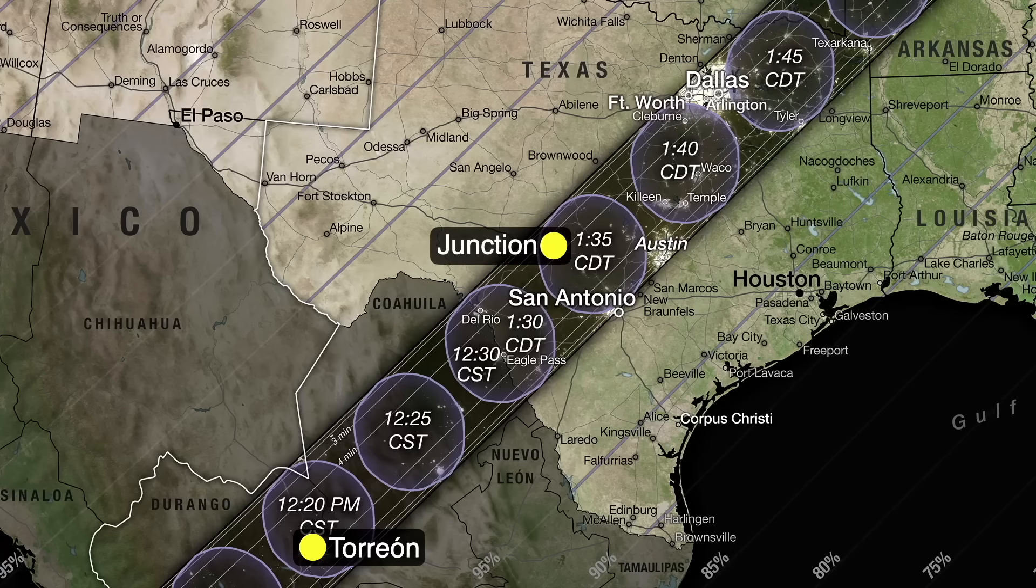A note about the times you see on this map. Mexico, smartly in my opinion, does not use daylight savings time. So the times in Mexico and the U.S. do not differ by slightly over one hour. Torreon is on central standard time, and Junction is on central daylight time.